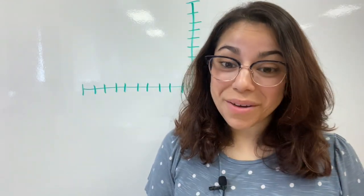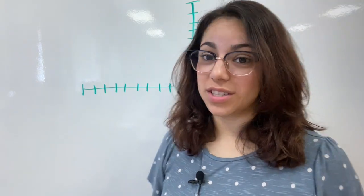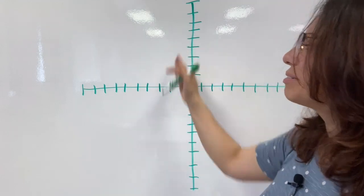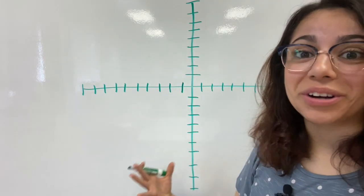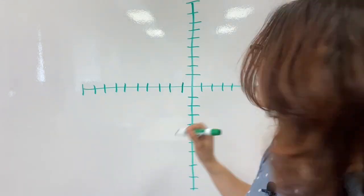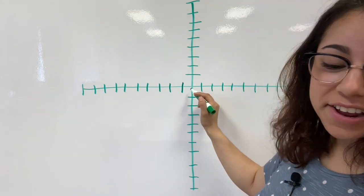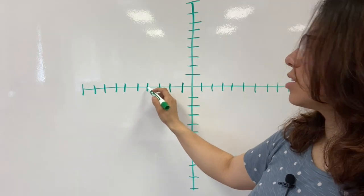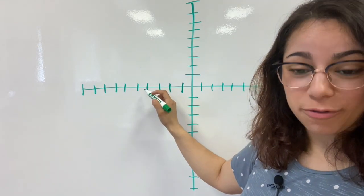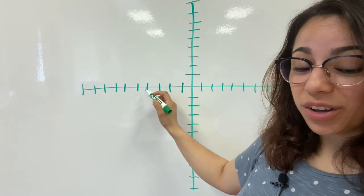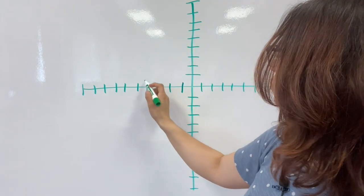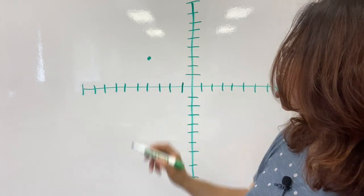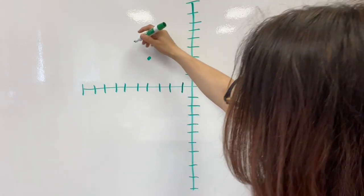Starting with step 1, it says graph the points. We're going to start on our origin. I'm going to go negative 4 — so 1, 2, 3, 4 — because remember we always start with our x first. And then I'm going to go positive 3: 1, 2, 3. So it's around there-ish. That is Camp 1.